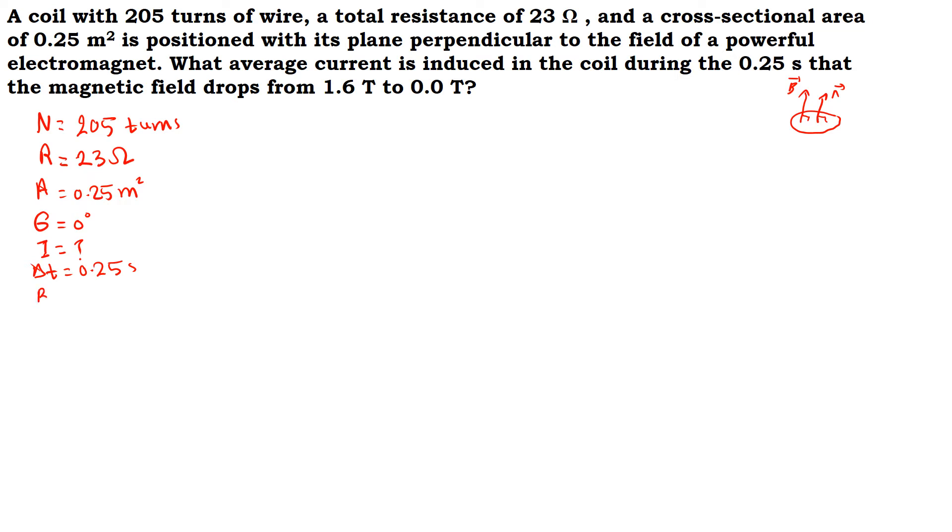The magnetic field drops from two values: an initial value which is 1.6 tesla and a final value which is 0.0 tesla.